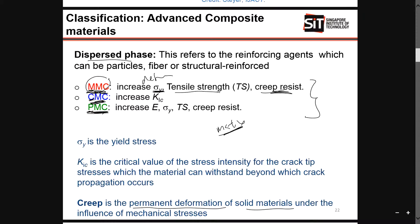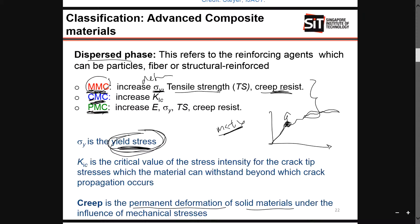We'll also talk about the increase of yield stress. If you remember in mechanics, the yield strength determines whether the material will deform or not. If you exert a force higher than the yield strength or yield stress of the material, then it will deform. For example, this is the elastic region. After the yield stress, which is over here, then you will go into permanent deformations. And over here is the ultimate fracture point.